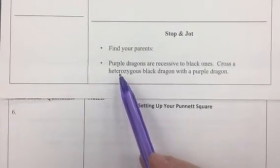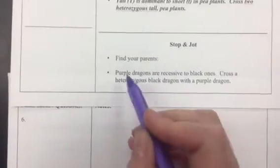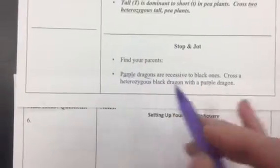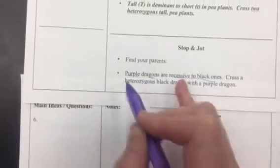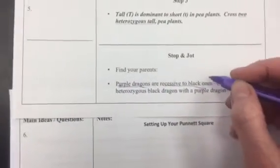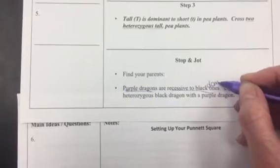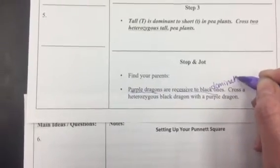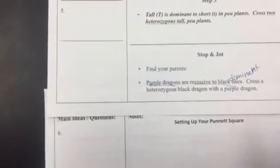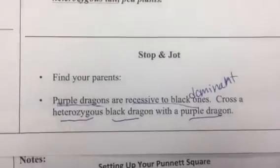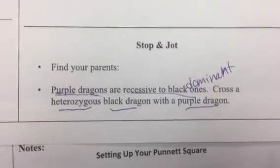So first we have: purple dragons are recessive to black ones. So we can underline that — purple dragons are recessive to black ones. That means the black ones are dominant. Cross a heterozygous black dragon with a purple dragon. So those are the important parts that we underline.